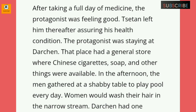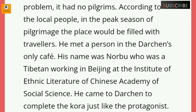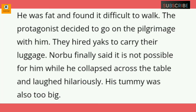The protagonist was staying at Darchun. That place had a general store where Chinese cigarettes, soap, and other things were available. In the afternoon, men gathered at a shabby table to play pool. Every day women would wash their hair in the narrow streams. Darchun had one problem — it had no pilgrims. According to the local people, in the peak season of the pilgrimage the place would be filled with travelers. He met a person in Darchun's only cafe named Norbu, who was a Tibetan working in Beijing at the Institute of Ethnic Literature of the Chinese Academy of Social Sciences.